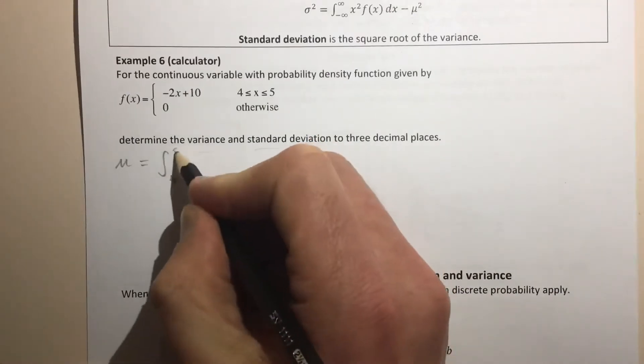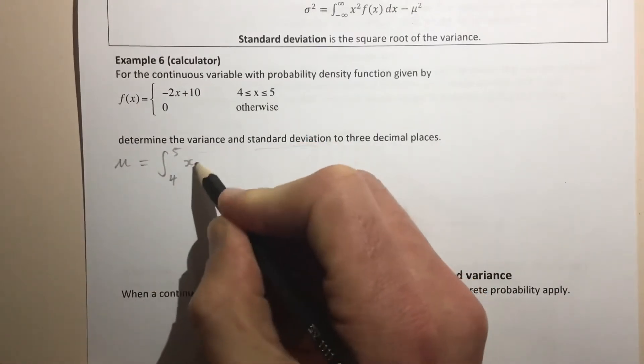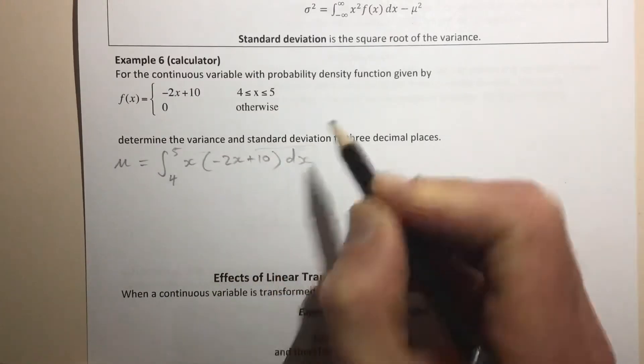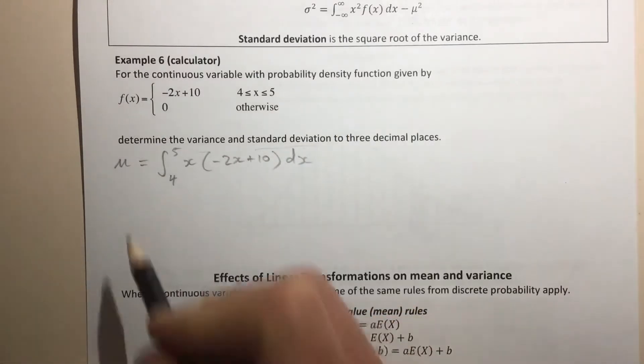it's the integral of the function over its non-zero values, so 4 to 5, of x times the function, so x times -2x + 10 with respect to x. This calculation here is going to give us the mean.